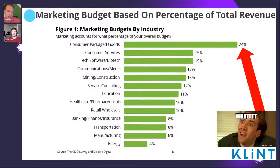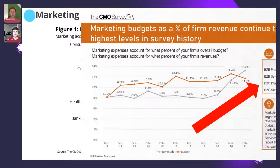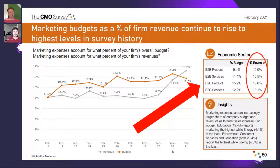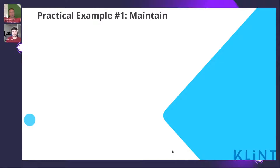The CMO survey by Deloitte had a bunch of CMOs answer this, and I'm going to challenge some of it. Apparently the industry of consumer packaged goods spends the most by percentage of total revenue on marketing. There are some slight differences between B2B product and services and B2C product and services. By and large, it's a long way to say that anywhere from 10 to 18% of total revenue should go into digital marketing — all things in digital marketing.